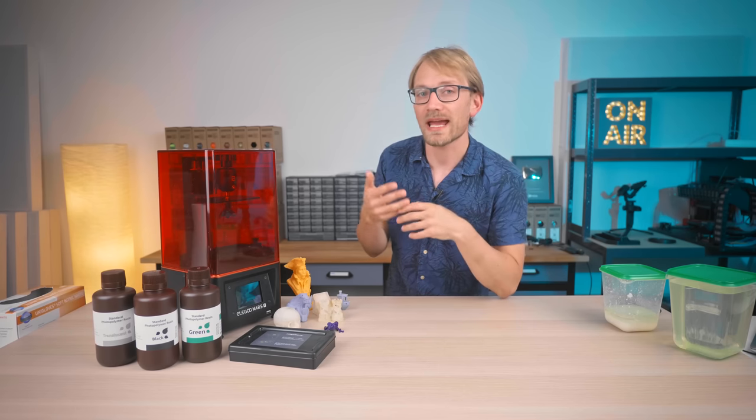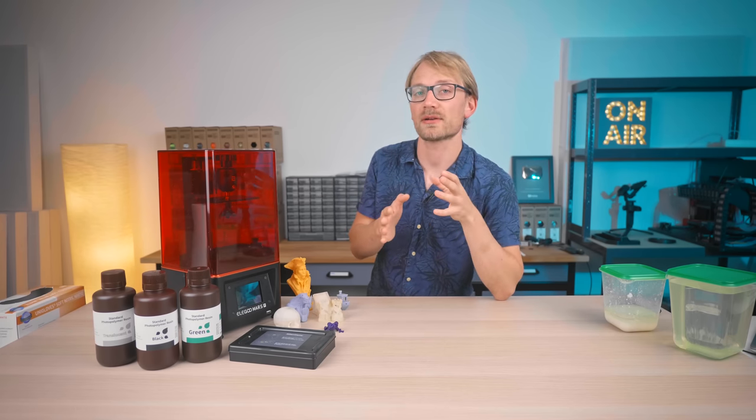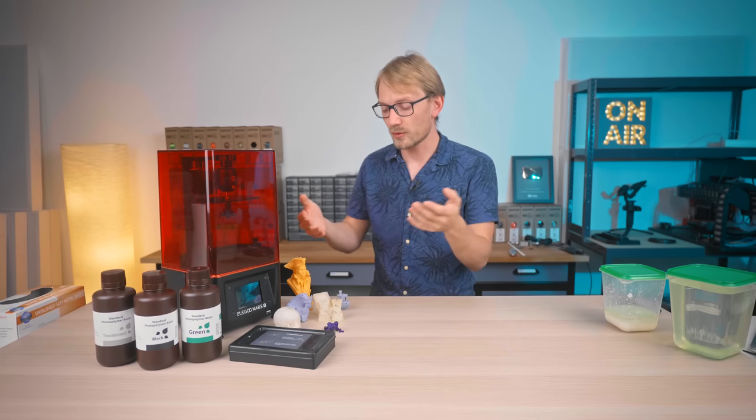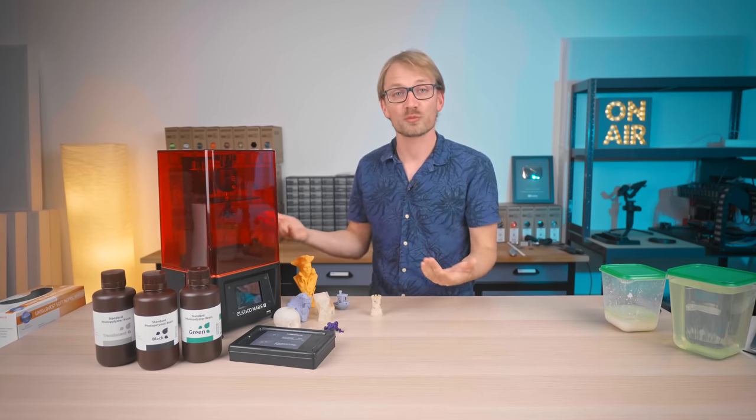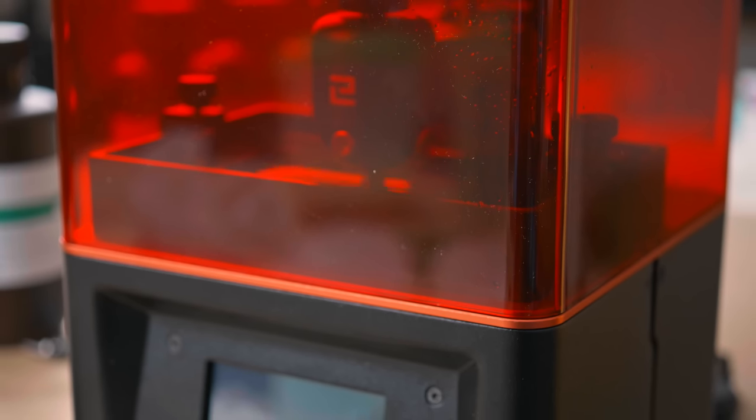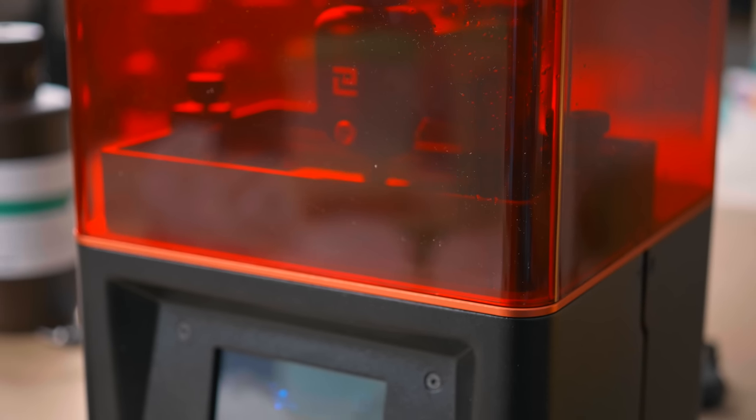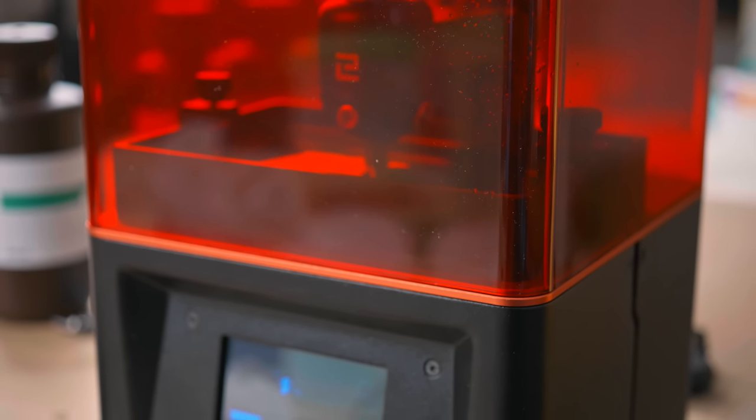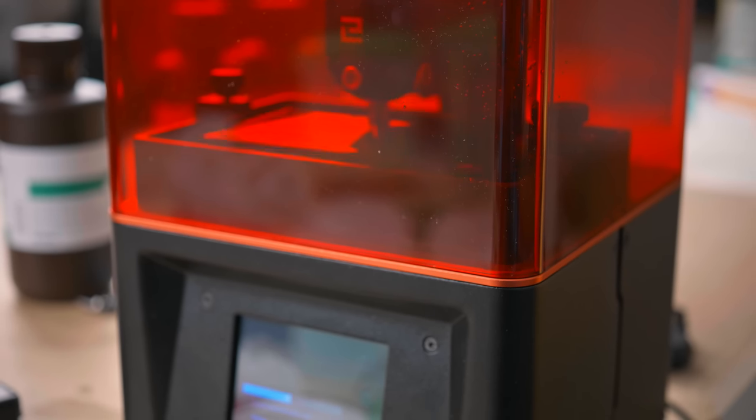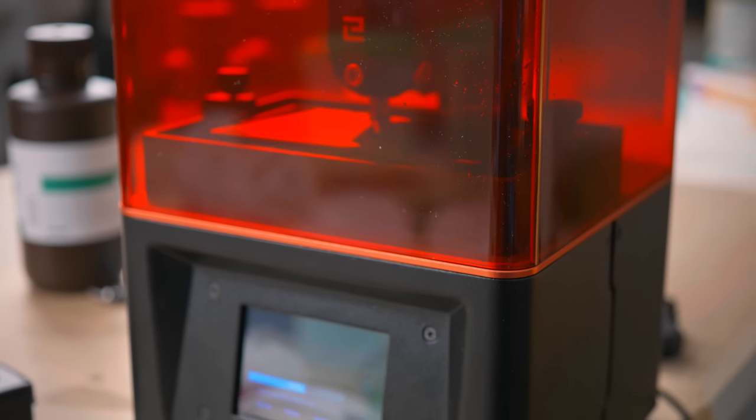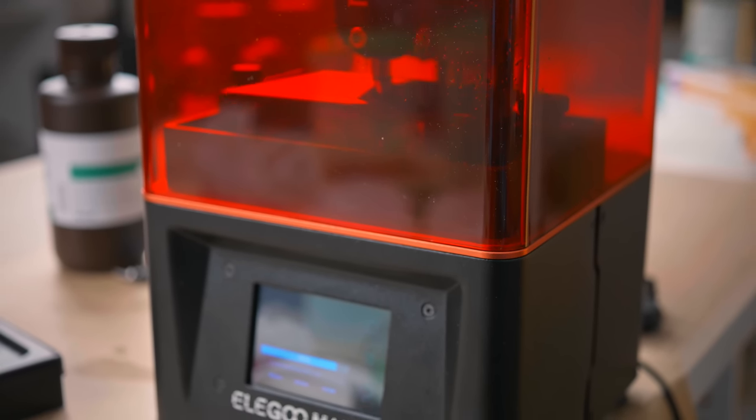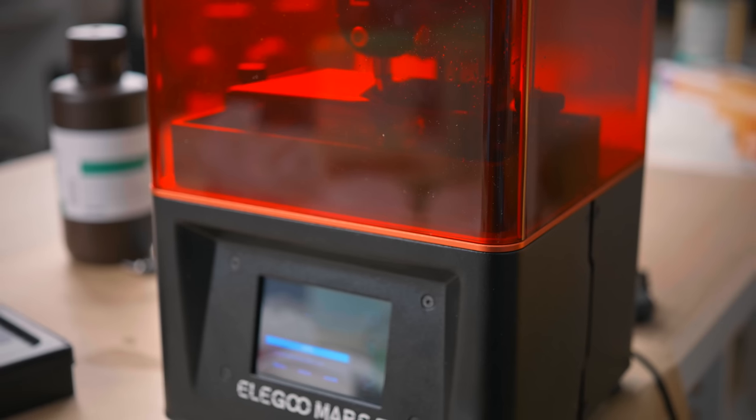So on an LCD, or often called MSLA printer, the entire layer is exposed and cured at the same time. So no matter how large or small your print is, it's always going to take the same time per layer, at least on the same machine, which means it's always building your print up at the same speed vertically. And as a result, these machines are often faster than filament printers at creating the same part. Also, if you want to print several parts at the same time, there's no time or quality penalty for that at all on an MSLA printer.